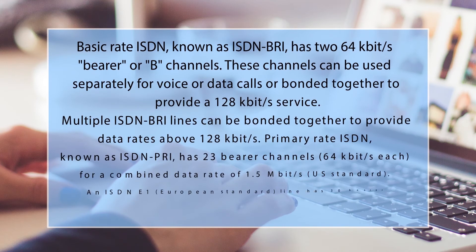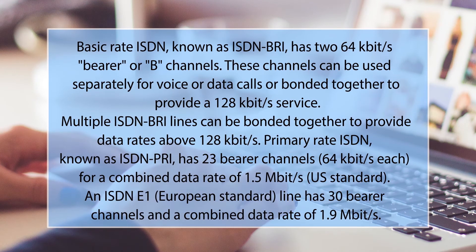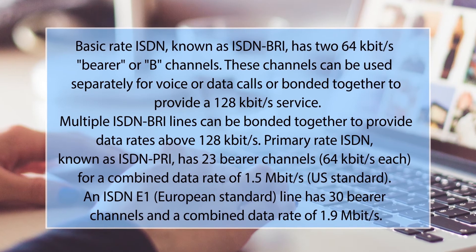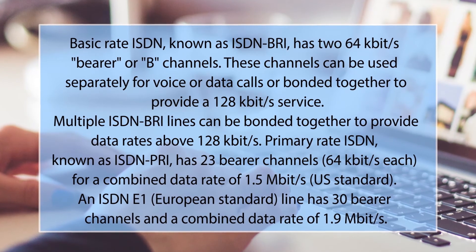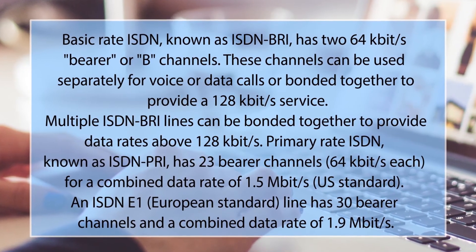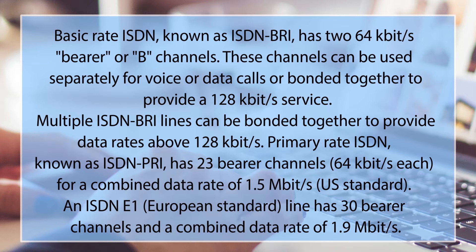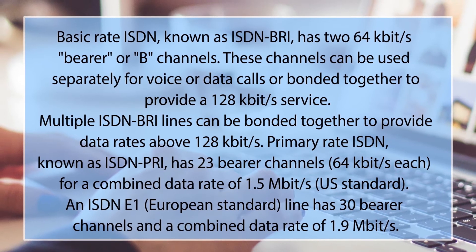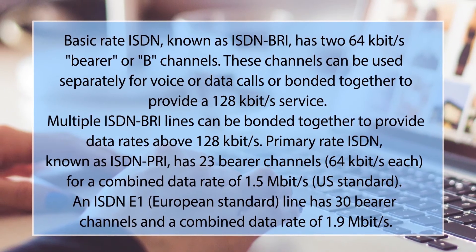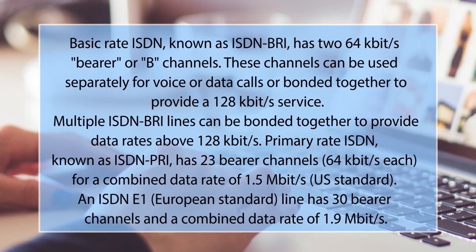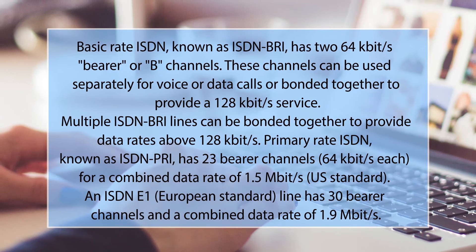Basic Rate ISDN (ISDN BRI) has two 64 kilobits per second bearer (B) channels. These channels can be used separately for voice or data calls, or bonded together to provide 128 kilobits per second service. Multiple ISDN BRI lines can be bonded for rates above 128 kilobits per second. Primary Rate ISDN (ISDN PRI) has 23 bearer channels at 64 kbps each for a combined rate of 1.5 Mbps. The European standard E1 has 30 bearer channels and a combined data rate of 1.9 Mbps.